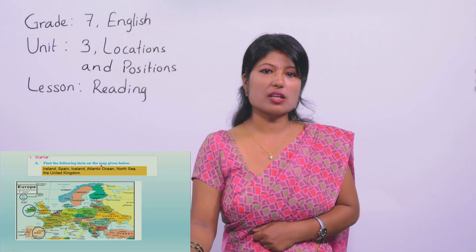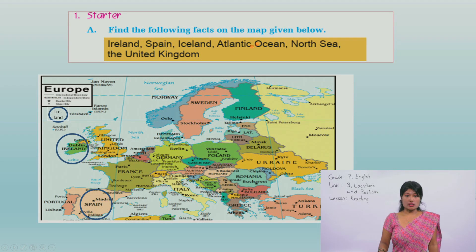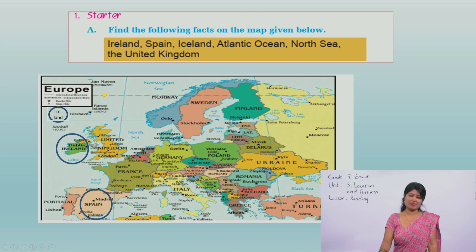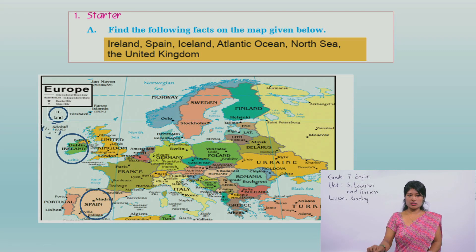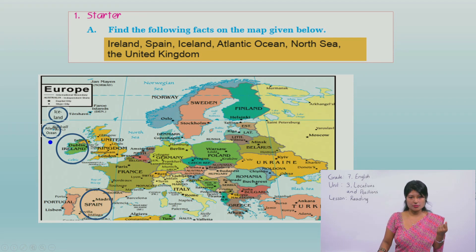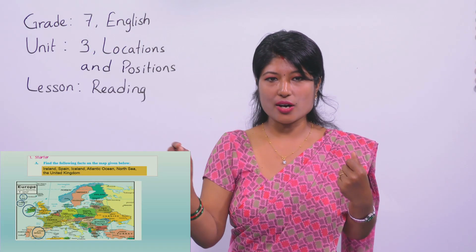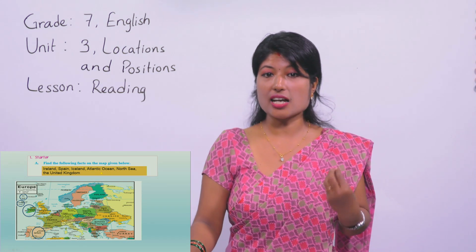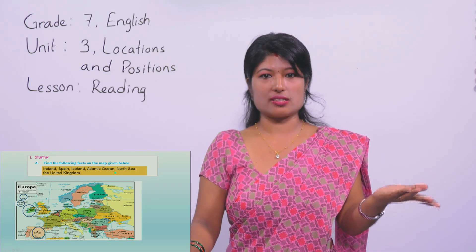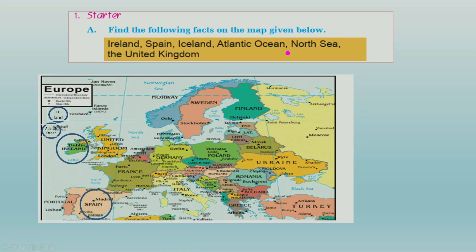Very good. Now let's move to another fact: Atlantic Ocean. Are you ready to find it? Just like Iceland, Atlantic Ocean is also missing from the labels. So somewhere here we find Atlantic Ocean - we have to put it ourselves. Please circle that point and write down Atlantic Ocean - A-T-L-A-N-T-I-C, O-C-E-A-N. Done?